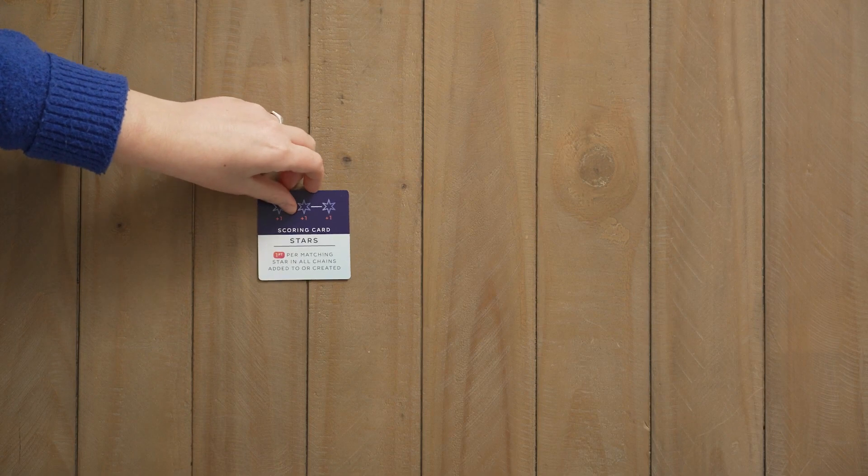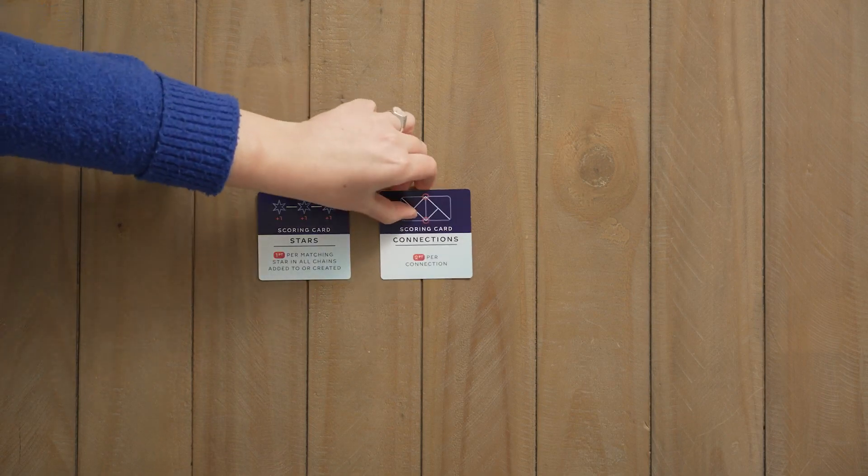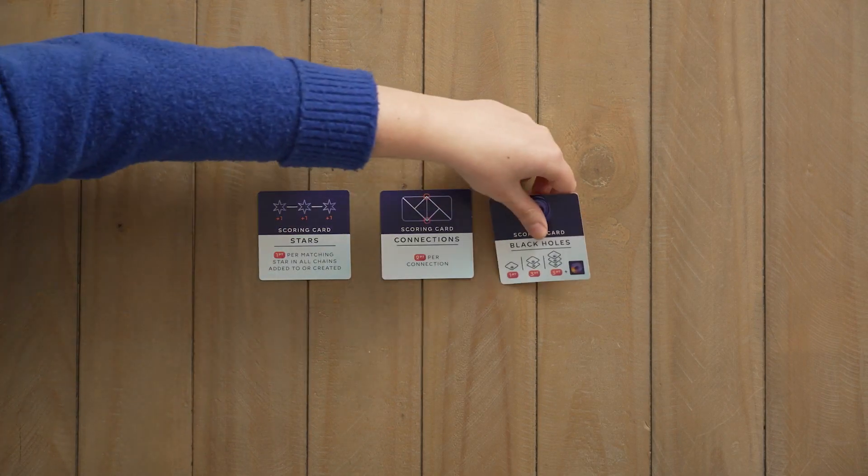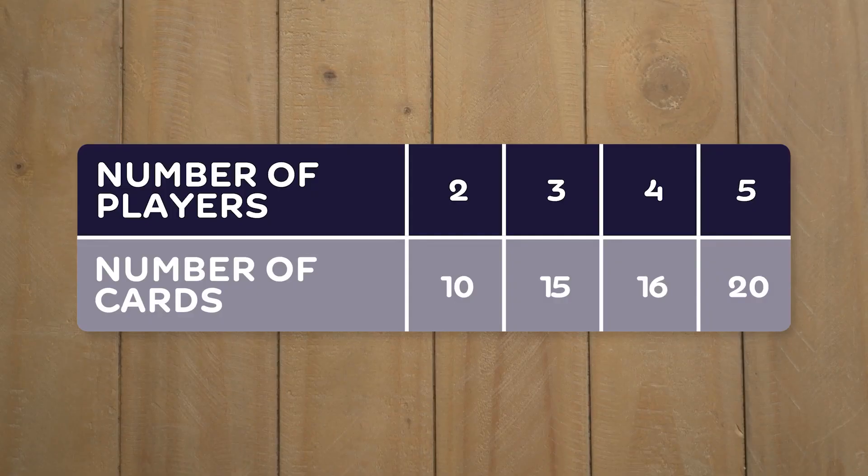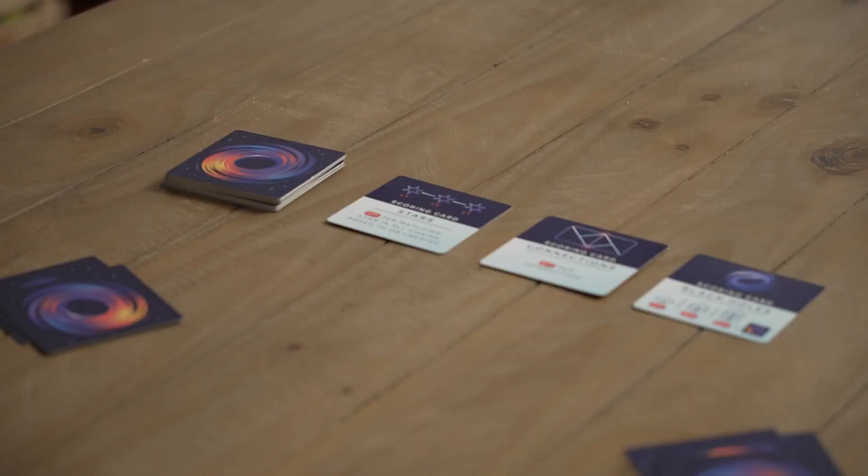To start, place the scoring cards for stars, connections and black holes in a row. Deal each player 3 galaxy cards, then create a draw pile following this table and place it next to the scoring cards.